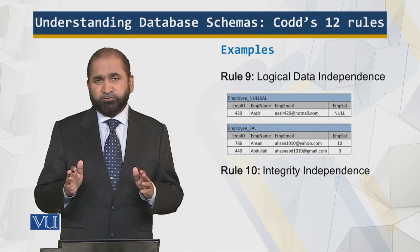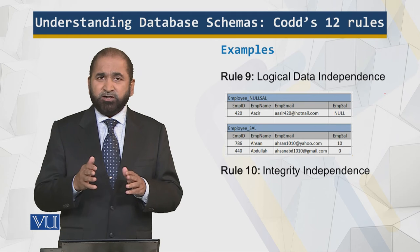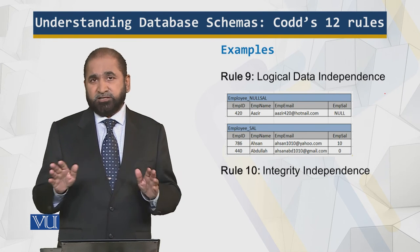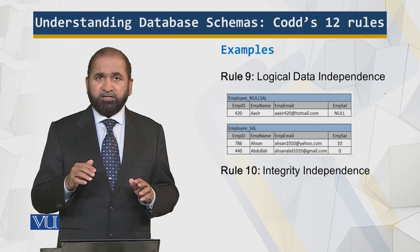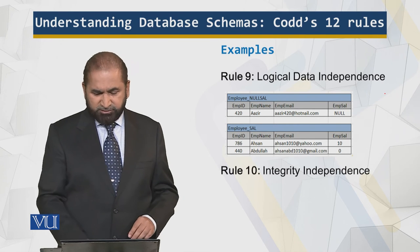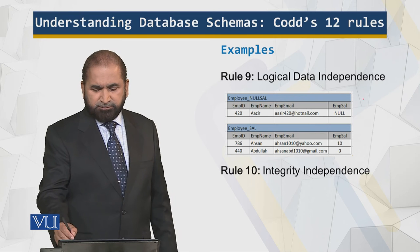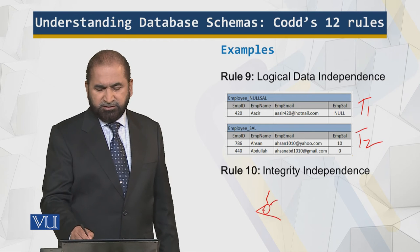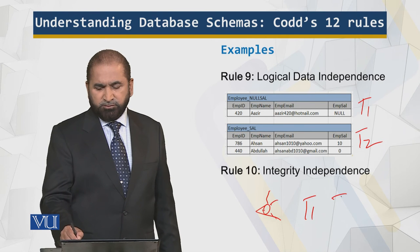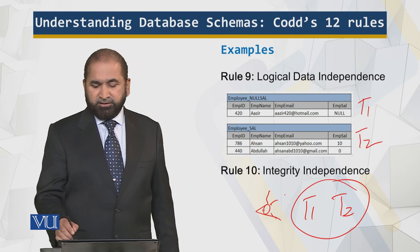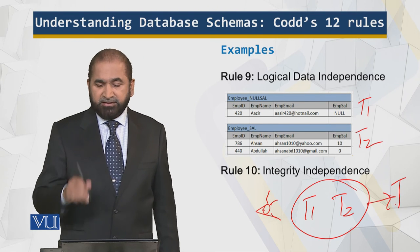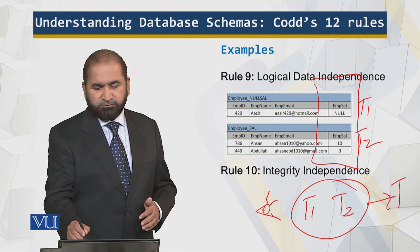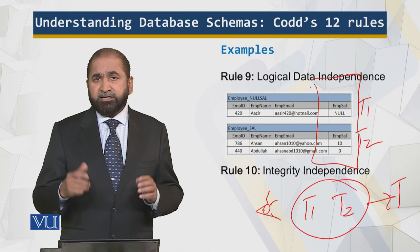Logical data independence means it is irrelevant how the data is logically stored. For example, the data is bifurcated into two tables — one for employees whose salary is not null, and one for employees whose salary is null. What the user sees is both table one and table two collectively, as table T. That is logical data independence. The partition of tables can also be vertical.